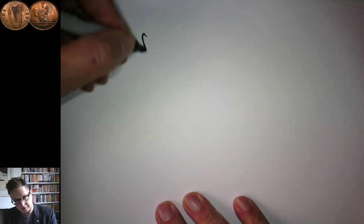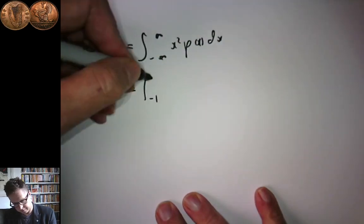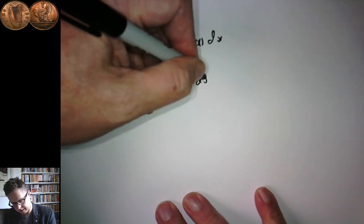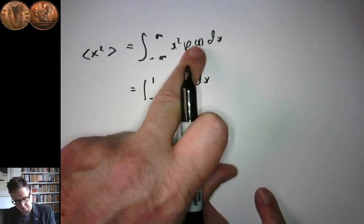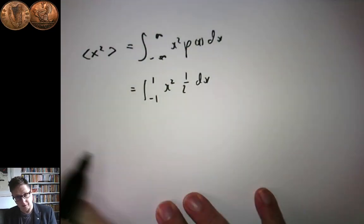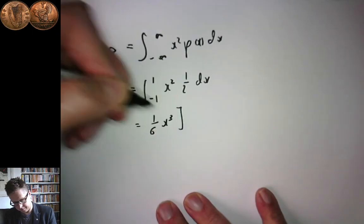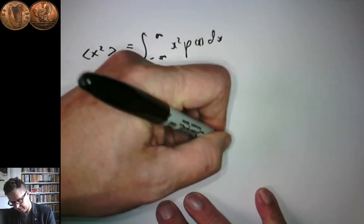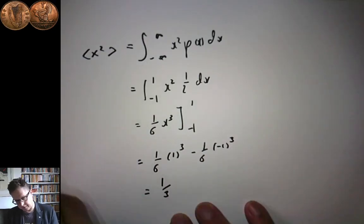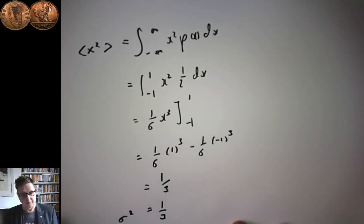What about the expected value of x squared? That's equal to the integral from minus infinity to infinity of x squared times p(x) dx, which equals the integral from minus one to one of x squared times one half dx. The regions outside contribute zero. Between minus one and one, p(x) is one half, so we get one sixth times x cubed evaluated from minus one to one, which equals one sixth of one cubed minus one sixth of minus one cubed, giving one third. Since mu equals zero, that tells us sigma squared equals one third.